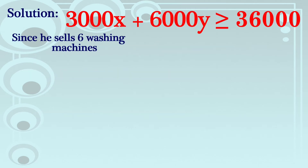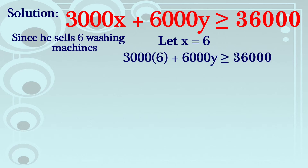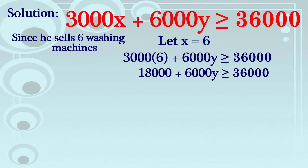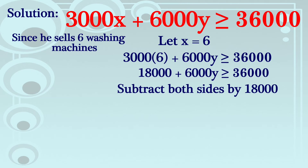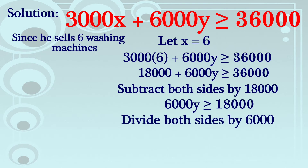Since he sells 6 washing machines, and ang ating washing machine ay X, we let X equal 6 then substitute sa ating inequality. So 3,000 times 6 is 18,000 plus 6,000Y is greater than or equal to 36,000. Subtract both sides by 18,000: 6,000Y ≥ 18,000. Divide both sides by 6,000: Y ≥ 3.